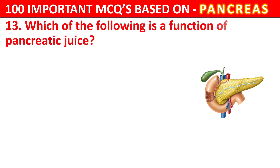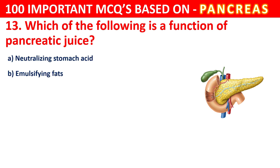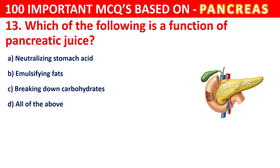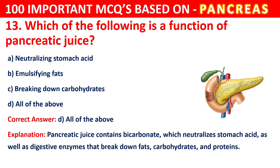Question 13. Which of the following is the function of pancreatic juice? Your options are Neutralizing stomach acid, Emulsifying fats, Breaking down carbohydrates, or All of the above. The correct answer is D, that is All of the above. Pancreatic juice contains bicarbonate which neutralizes stomach acid, as well as digestive enzymes that break down fats, carbohydrates, and proteins.